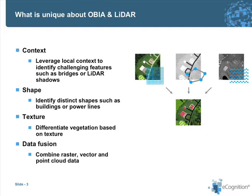Another unique aspect is the shape of features. For example, power lines have a very distinct shape which the object-based approach can leverage to actually identify those features.